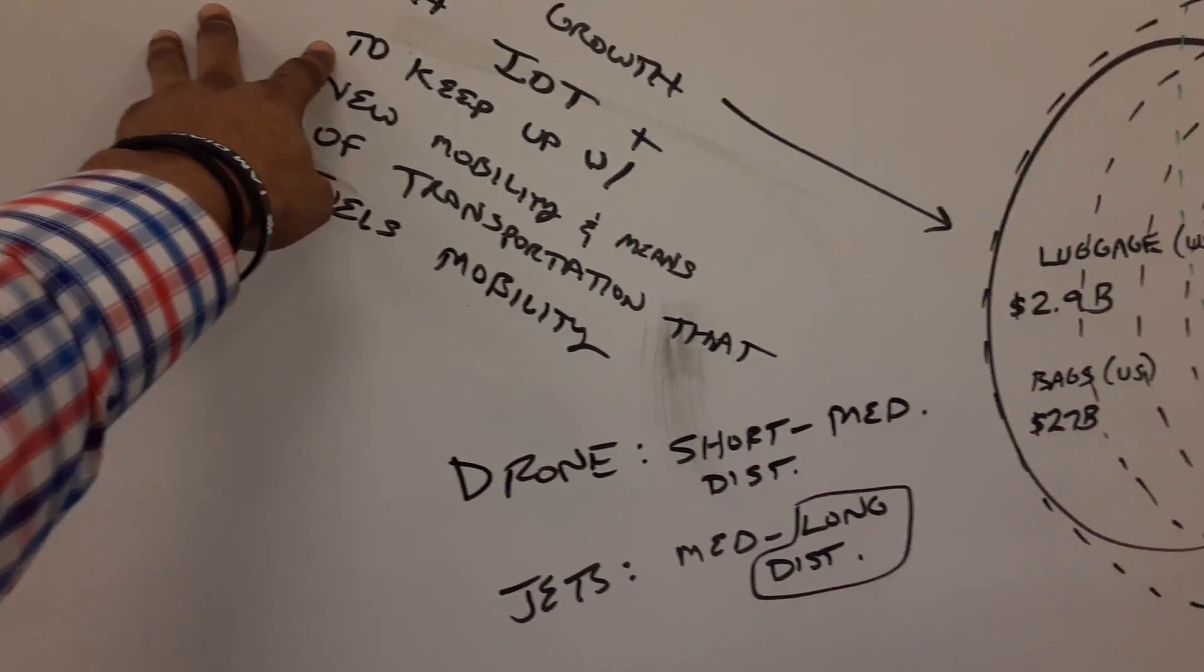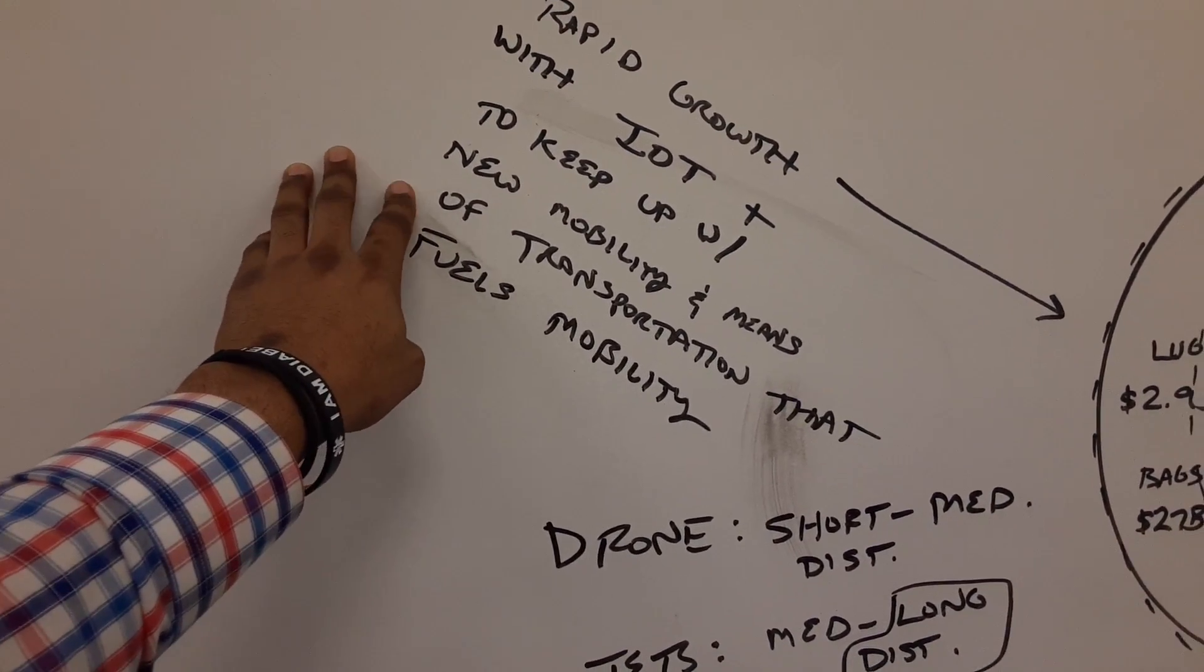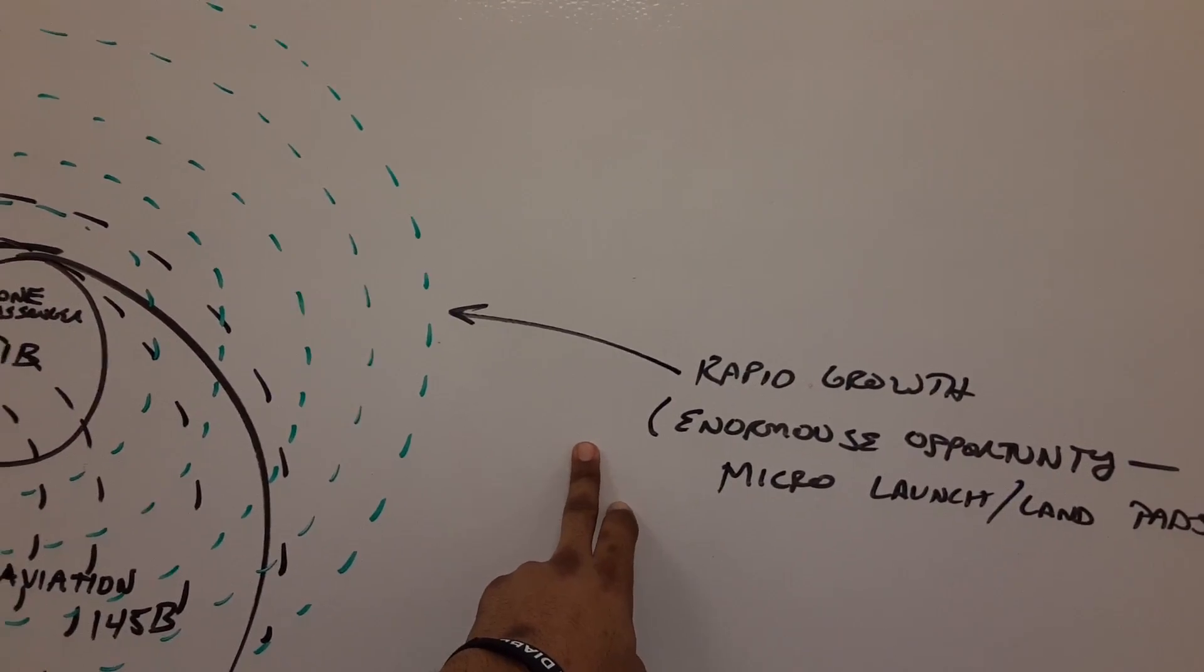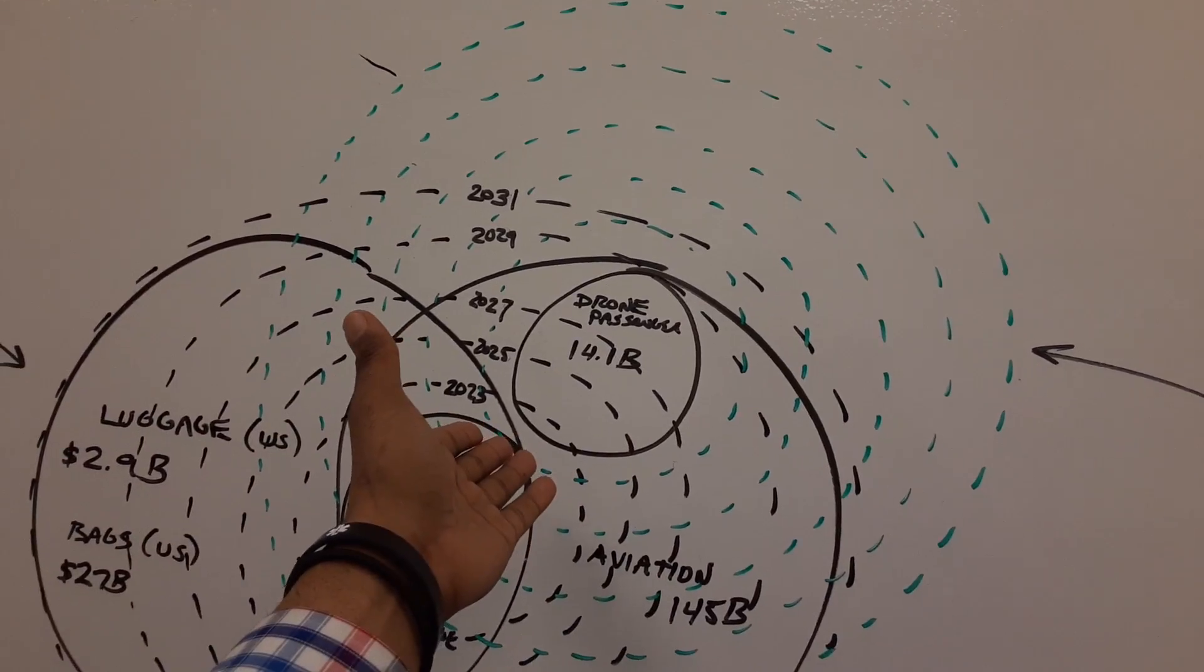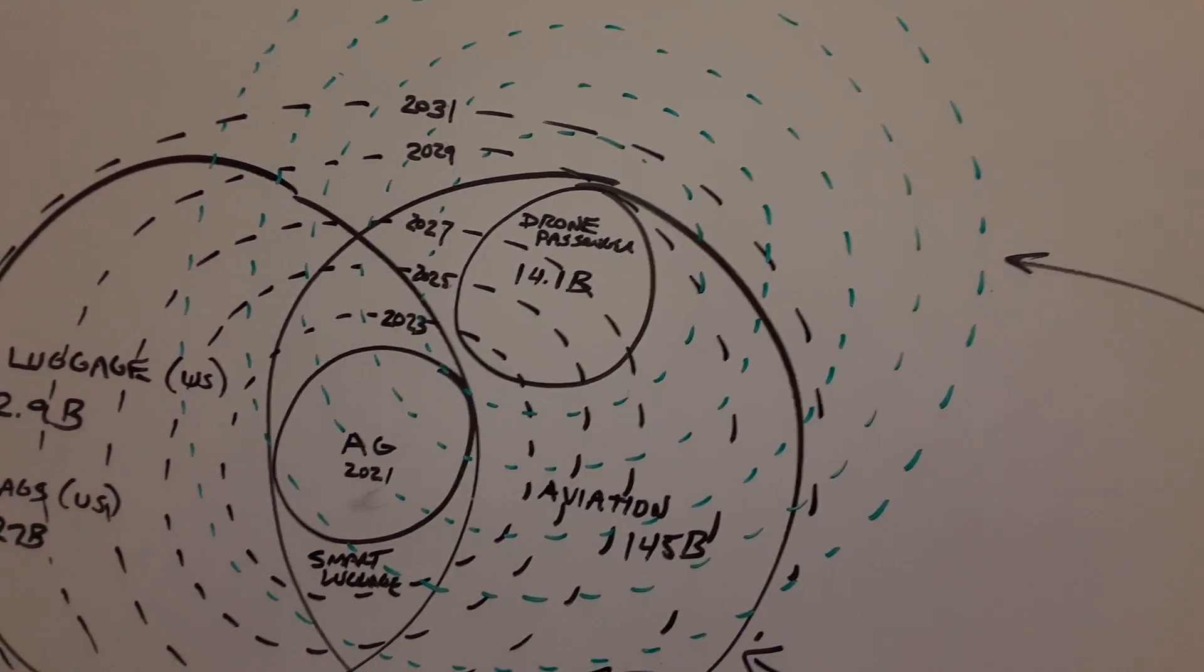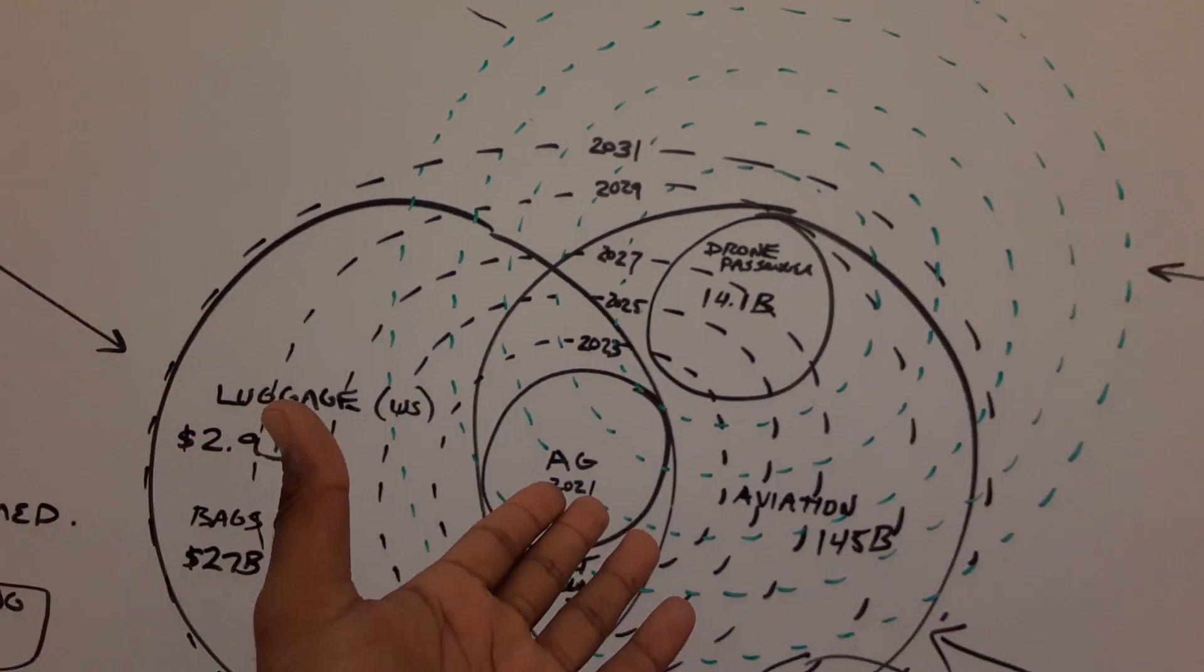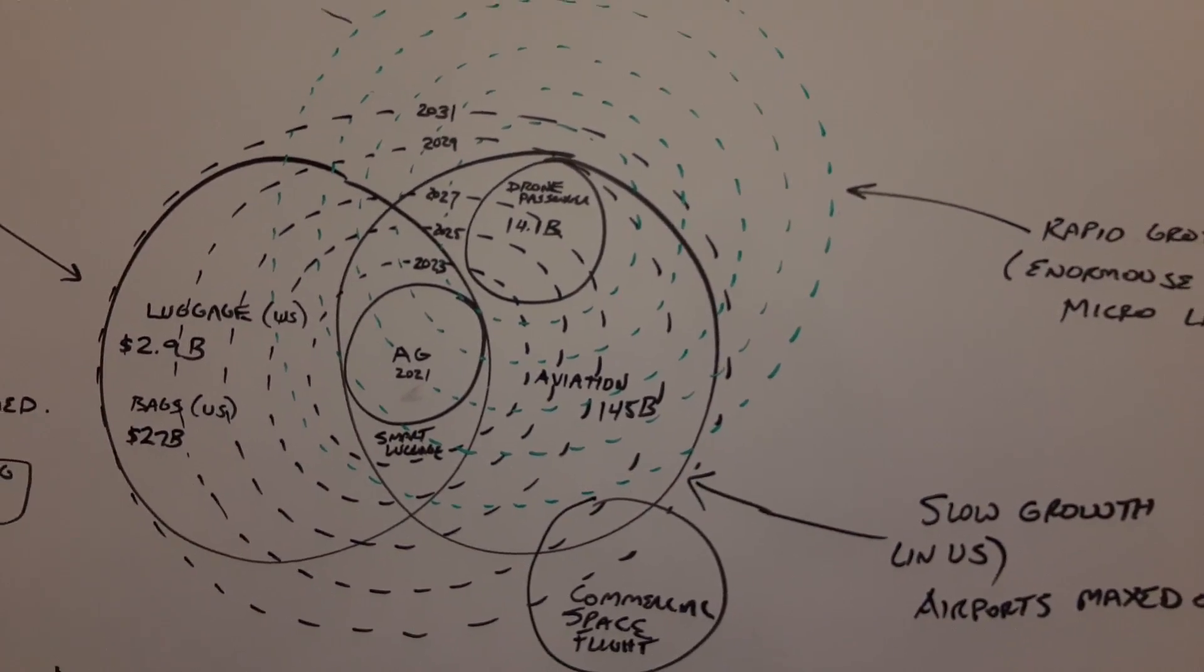We're saying there's going to be rapid growth with IoT, Internet of Things, to keep up with the new mobility and means of transportation that fuel that mobility. There's going to be rapid growth in this drone passenger market, enormous opportunity. Micro launch pads is really nice. You don't have to build a huge giant airport to accommodate these. You can literally take the top of a skyscraper or the top of a building or just build a small landing pad since they have vertical takeoff, and you're good to go on that network. It could spread quite quickly.